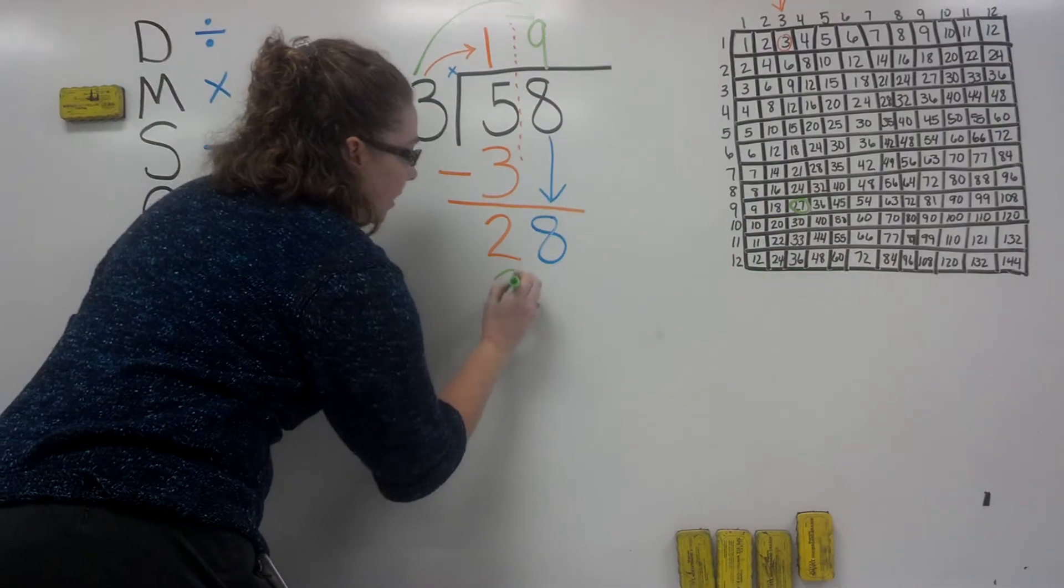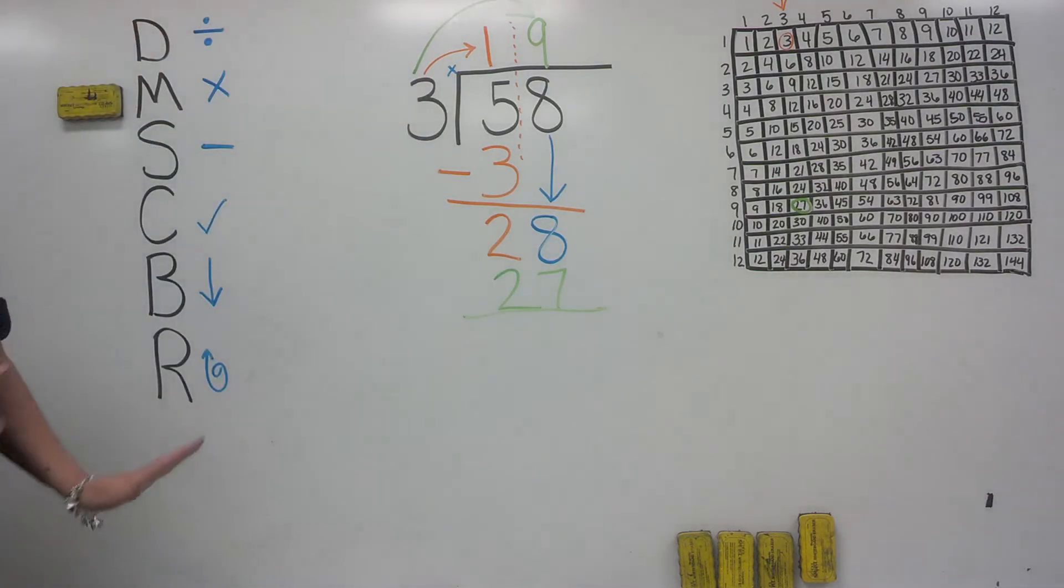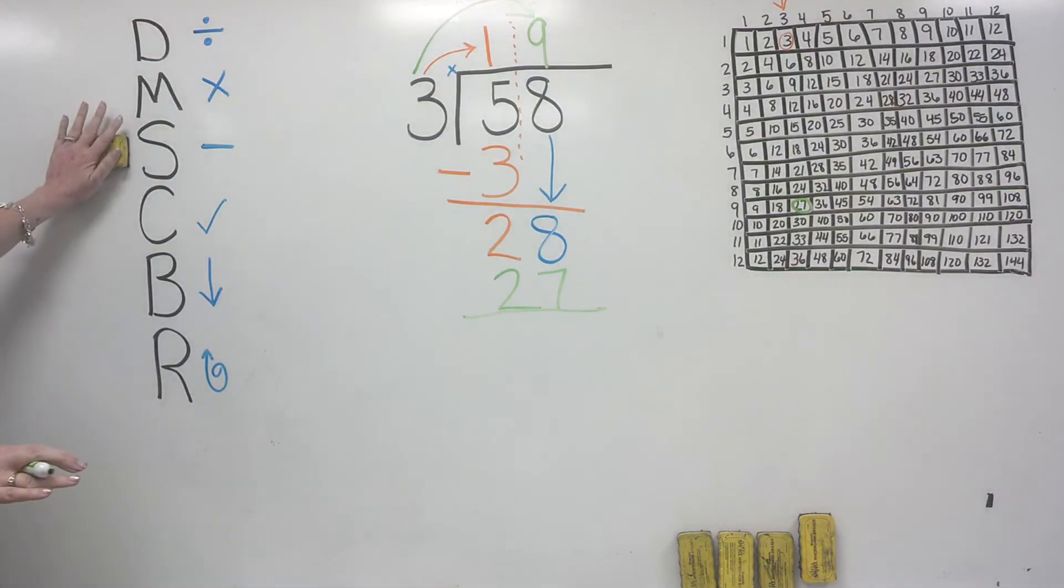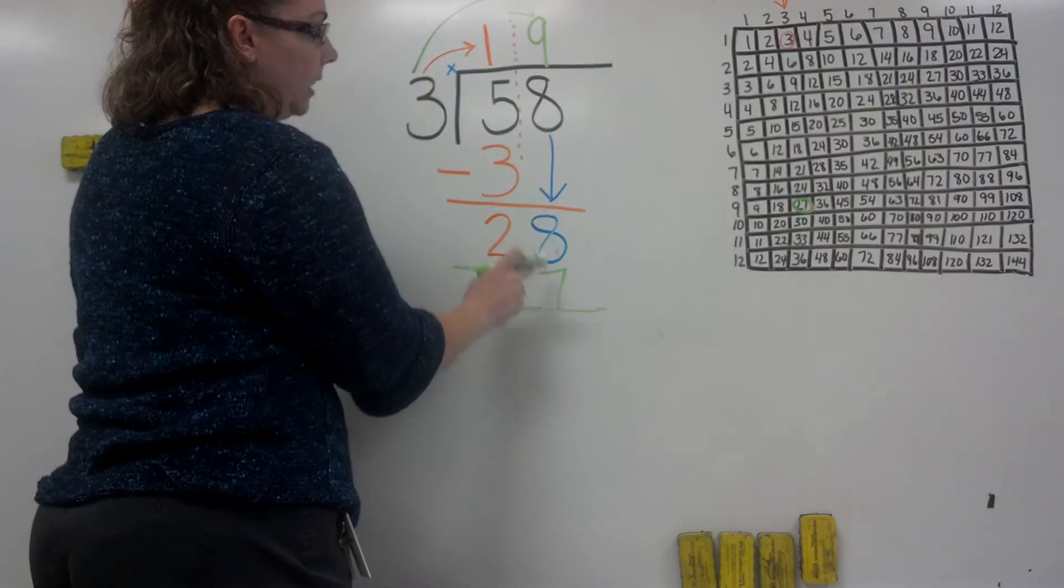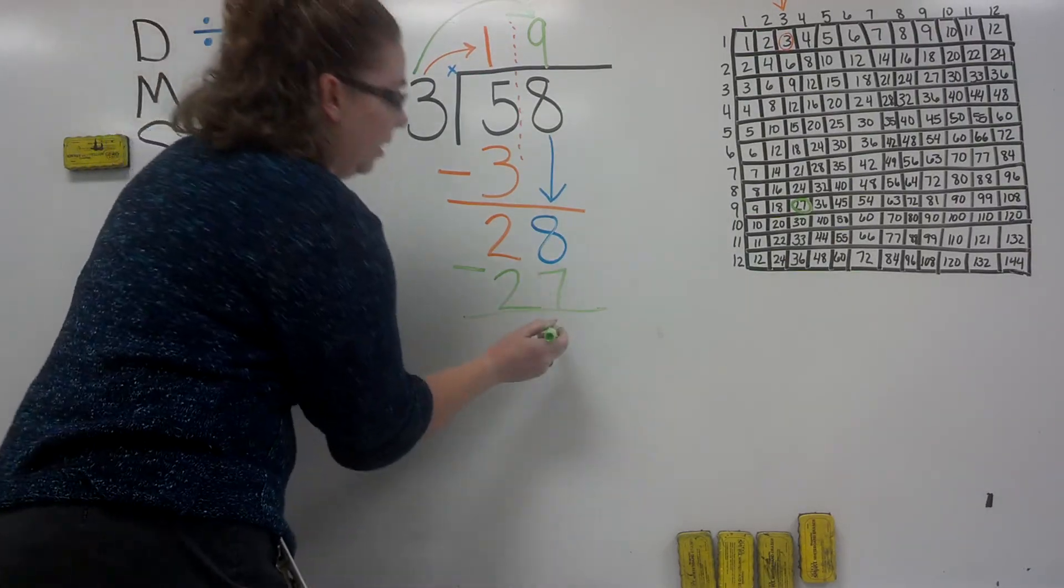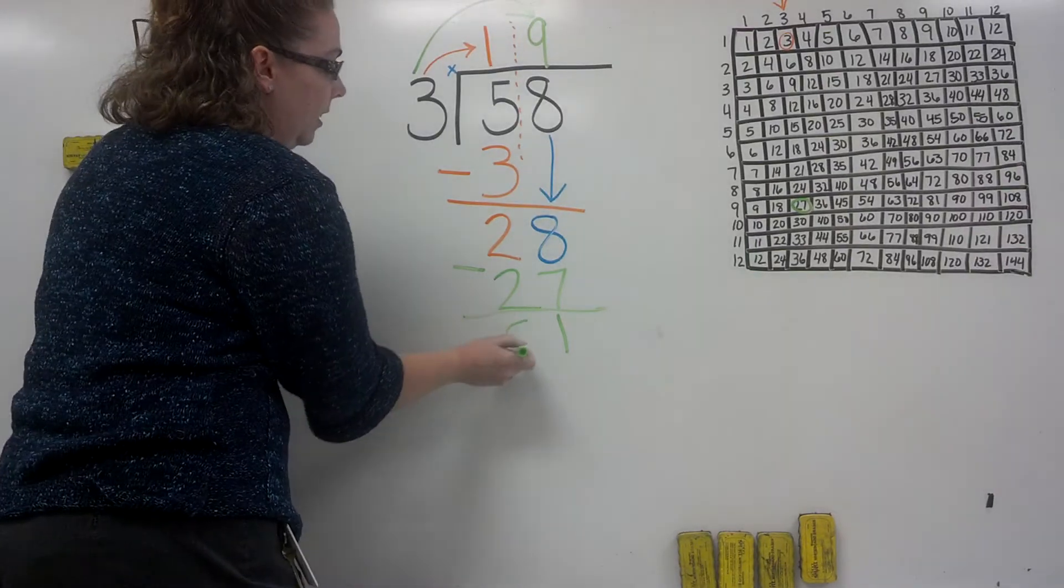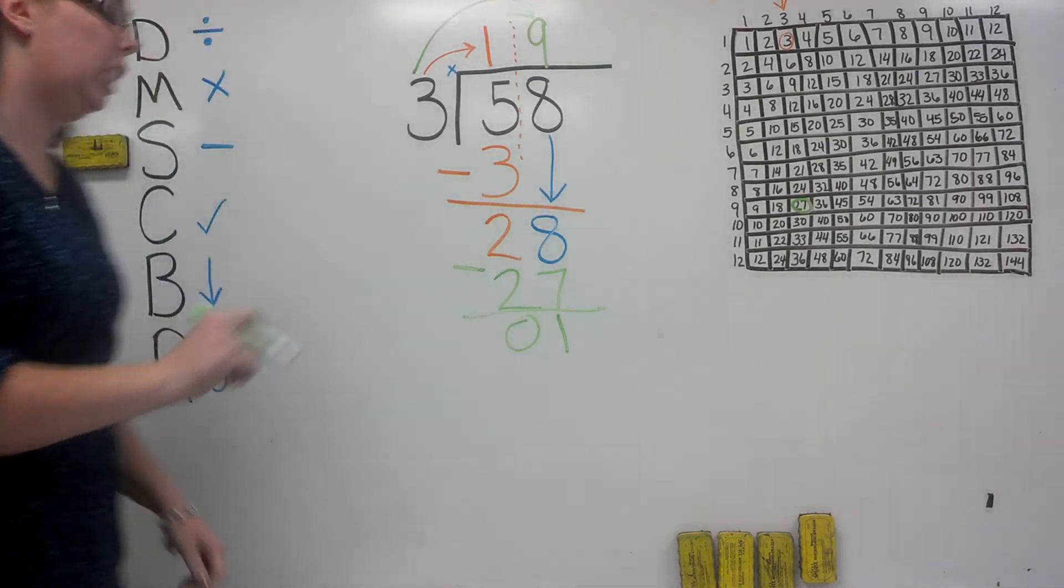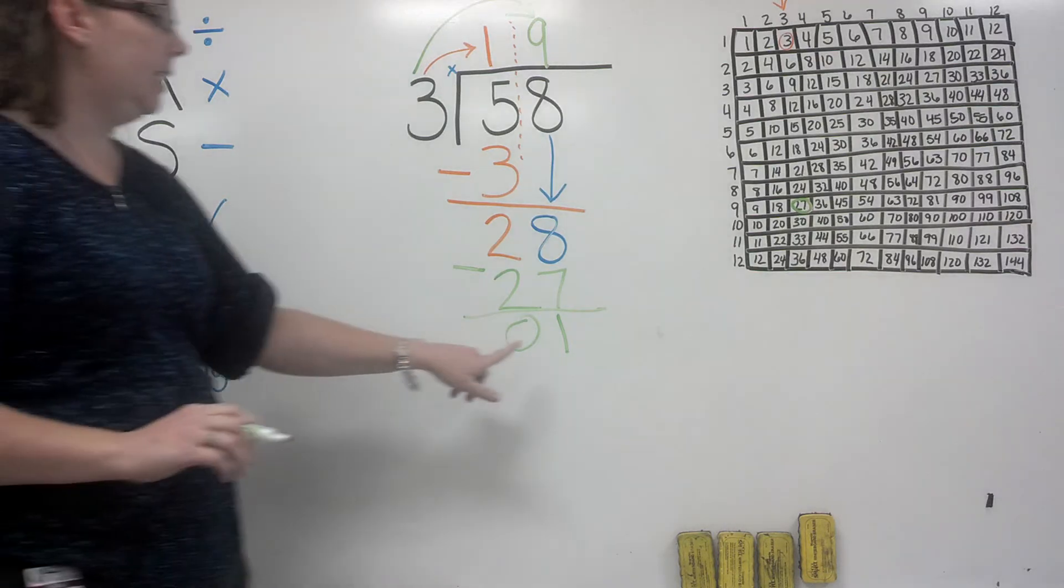We did our multiplication step. Let's go to the next step: subtract. We're going to subtract these two numbers from each other, so 8 minus 7 is 1, and 2 minus 2 is 0. Now let's check. We need to see: is 1 less than 3? Yes it is.